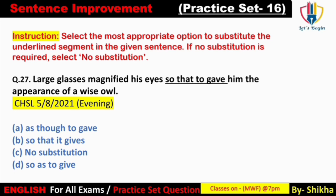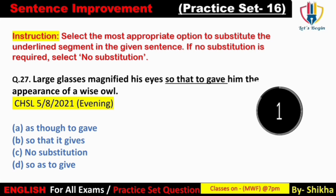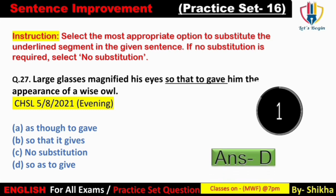Next: 'Large glasses magnified his eyes so that to gave him the appearance of a wise owl.' 'So that to' nahi hota — 'so as to' hota hai, jiska matlab hota hai 'in order to.' Answer: option D — 'so as to give.'